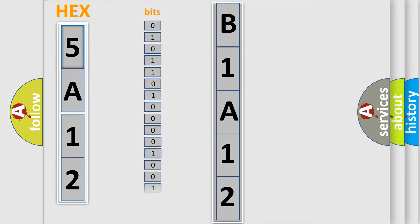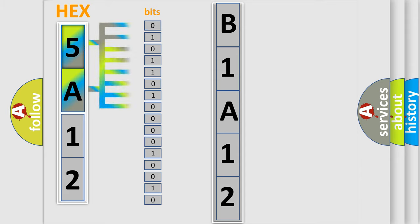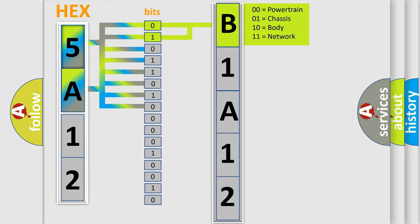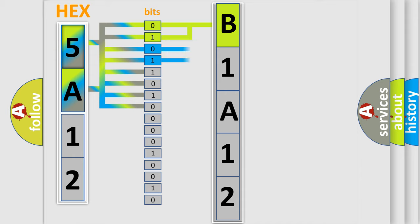One bit is the basic unit that each computer works with. The bit has two logical states: zero, meaning low level, and one, meaning high level. By combining the first two bits, the basic character of the error code is expressed. The next two bits again determine the second character.